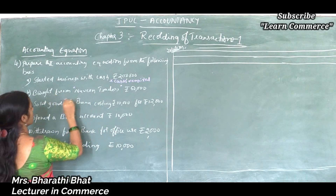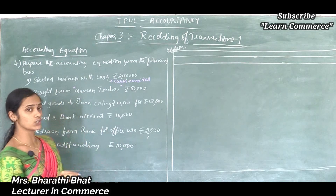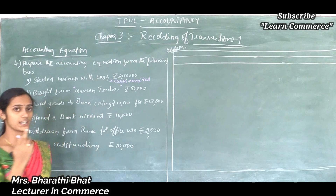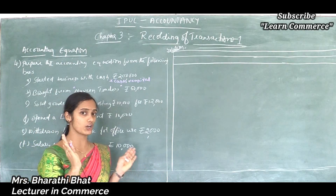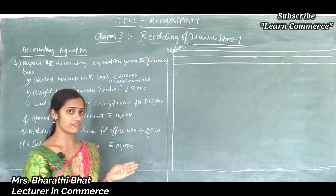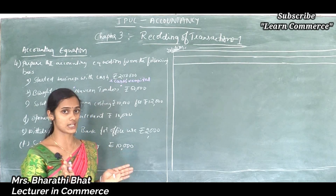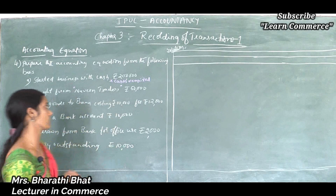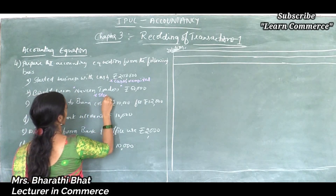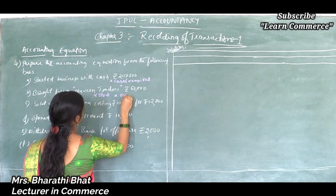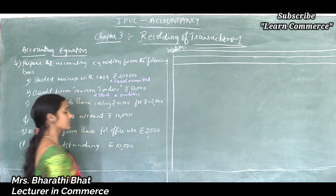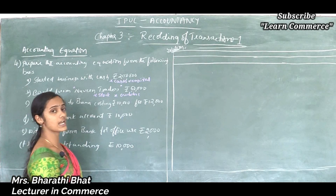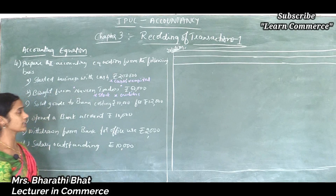So bought from Naveen — one account is creditors, and one more account is stock. When we purchase something, our stock increases. If there is no specific asset name mentioned like furniture, machinery, or loose tools, then we should assume that transaction affects stock. Creditors come under liabilities, so there is an increase in liabilities along with an increase in stock.